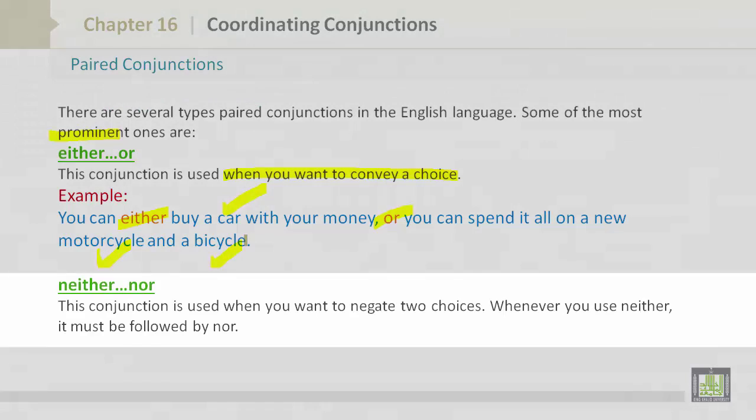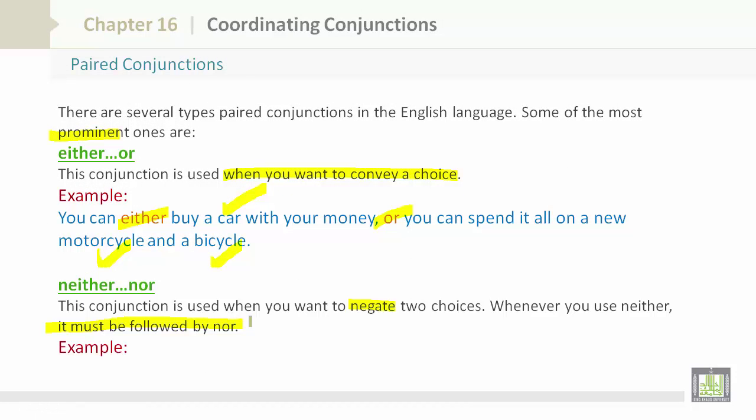Neither nor. This conjunction is used when you want to negate two choices. Whenever you use neither, it must be followed by nor. Example: Neither Ahmed nor Hassan can save Sultan. Neither and nor both show that something cannot happen. This is negating two choices.